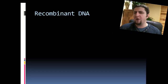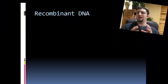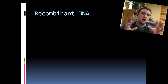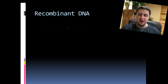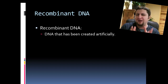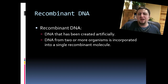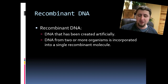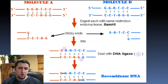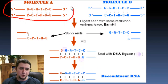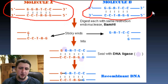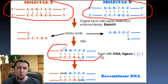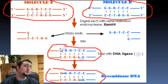Recombinant DNA is where we take DNA from two organisms and recombine them into one segment of DNA — DNA created artificially from two or more organisms incorporated into one single DNA molecule. If we say this is the DNA from one organism and this is DNA from another, we use certain enzymes to recombine them into one segment of DNA that now has the traits of both original segments.